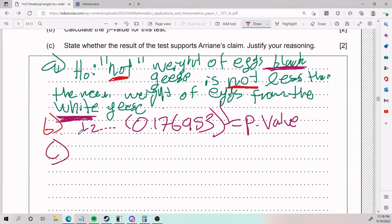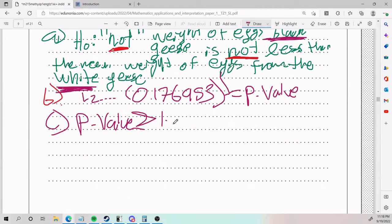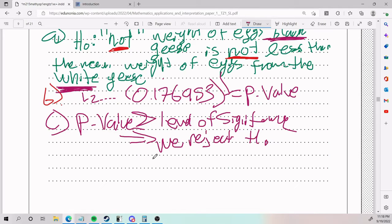For part C, the result of the test supports Ariane's claim. Justify your reasoning. The way you conclude this is that you say p-value greater than level of significance implies we reject H0, which is another way to say not supported by evidence. If that's the case, we reject the H0. If not, we accept the H0 and do support the evidence. This is one of the few things you kind of have to memorize.